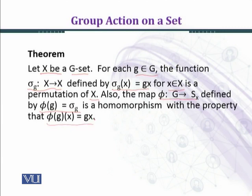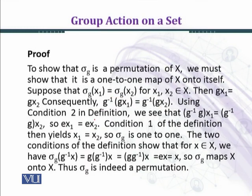Let's prove the theorem. First, we shall prove that sigma G is the permutation of X. To show that sigma G is a permutation of X, we must show that it is one-to-one map of X onto itself. That is, we want to show sigma G is bijective.